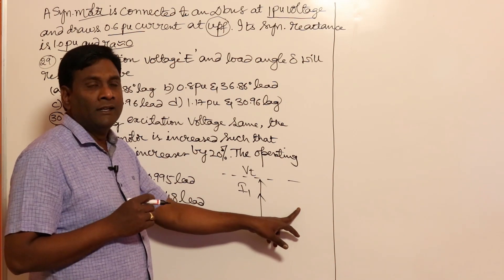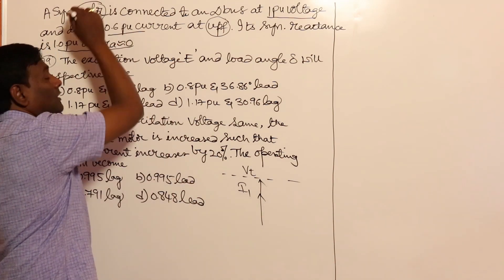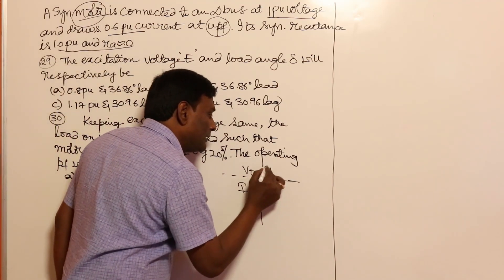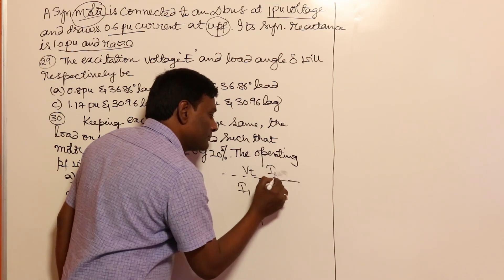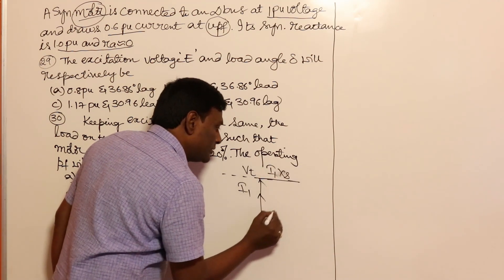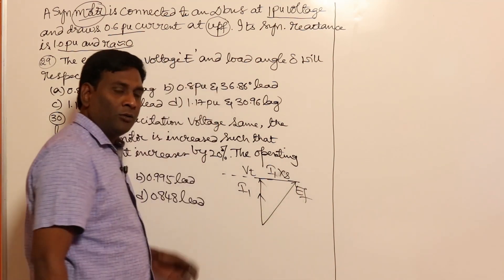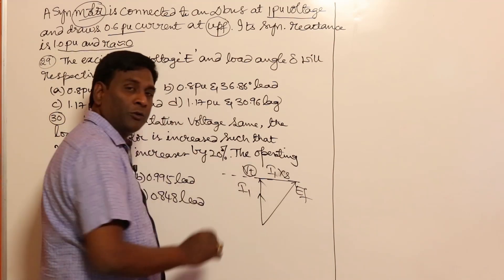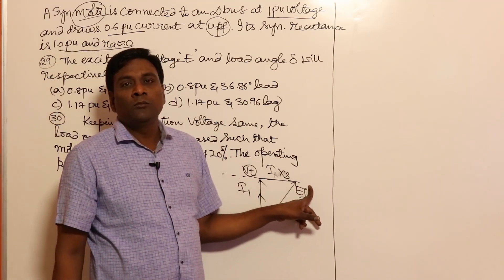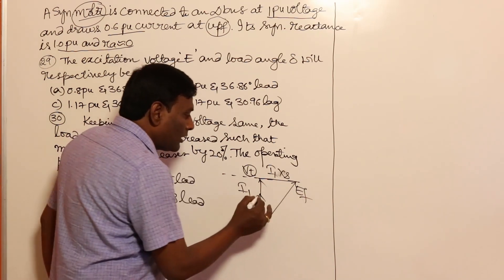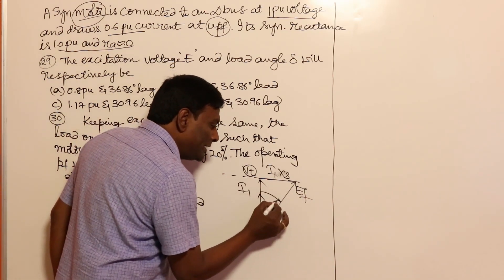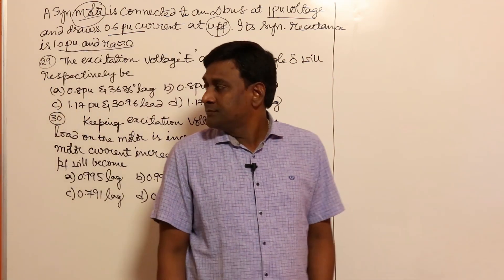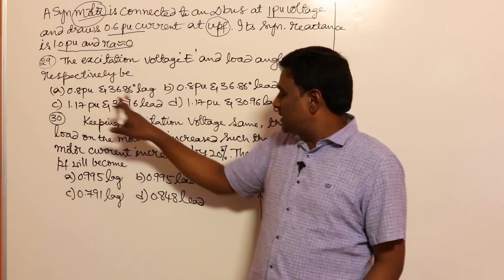It's a motor, so the current is compulsorily lagging. So this should be IA1·Xs, and this should give EF. Now the length of EF — should it be more than VT or not? Yes, if VT equals 1 per unit, EF should be more than one. And since it's a motor, EF should be lagging with respect to VT by delta. See the options: EF 0.8 per unit — wrong, it should be more than one.